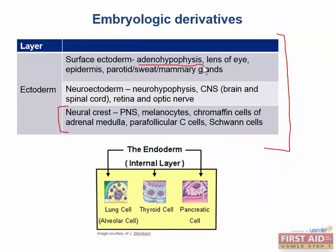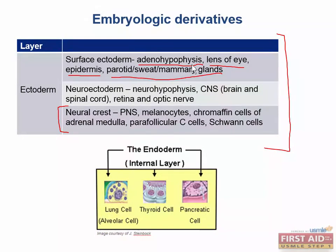Surface ectoderm derivatives include the adenohypophysis, which is the anterior pituitary, the lens of the eye, the epidermis, and the parotid, sweat, and mammary glands. Also good to remember that the adenohypophysis is derived from Rathke's pouch.